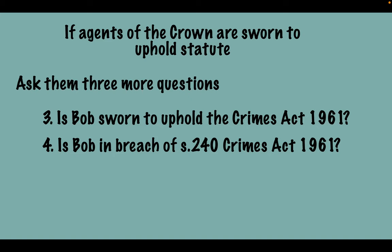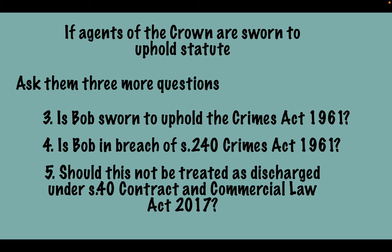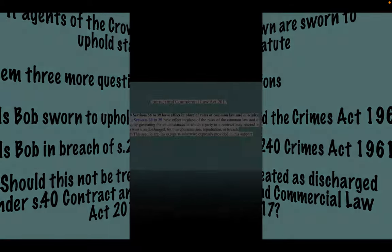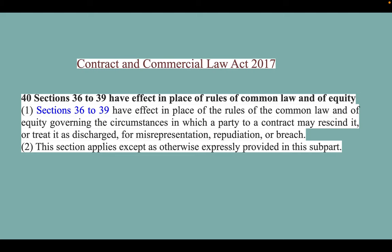So Bob is in breach of section 240 of the Crimes Act. Now we only need one more question to discharge the whole thing: should this not be treated as discharged under section 40 of the Contracting and Commercial Law Act? This section throws the whole thing out. Sections 36 to 39 have effect in place of the rules of the common law and of equity governing the circumstances in which a party to a contract may rescind it or treat it as discharged for misrepresentation. By coming in and addressing us as the surname, they are misrepresenting our character — our given names are the only names we were given. The government gave us a surname, so they are misrepresenting, and this is the end of the matter.